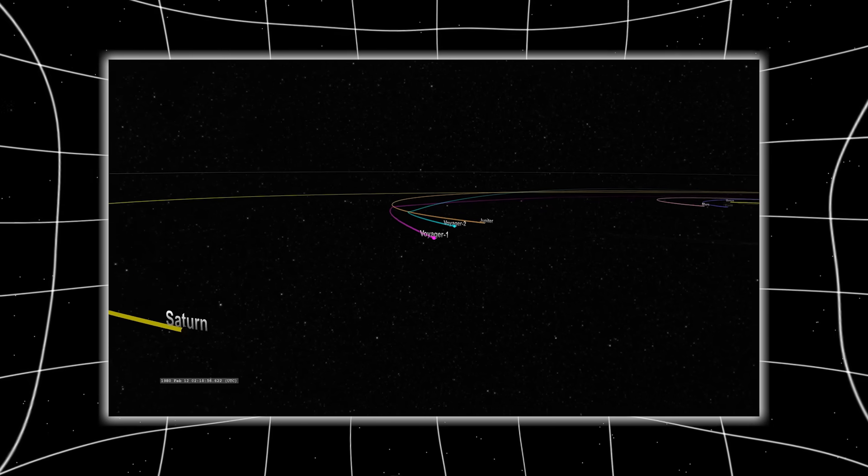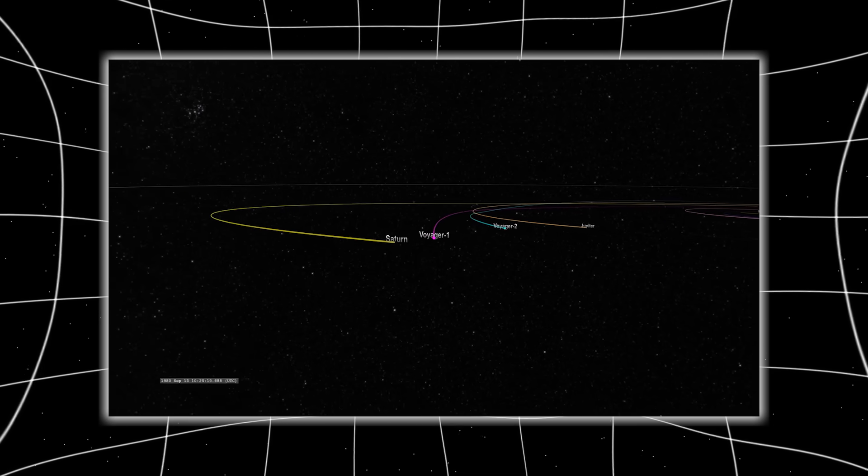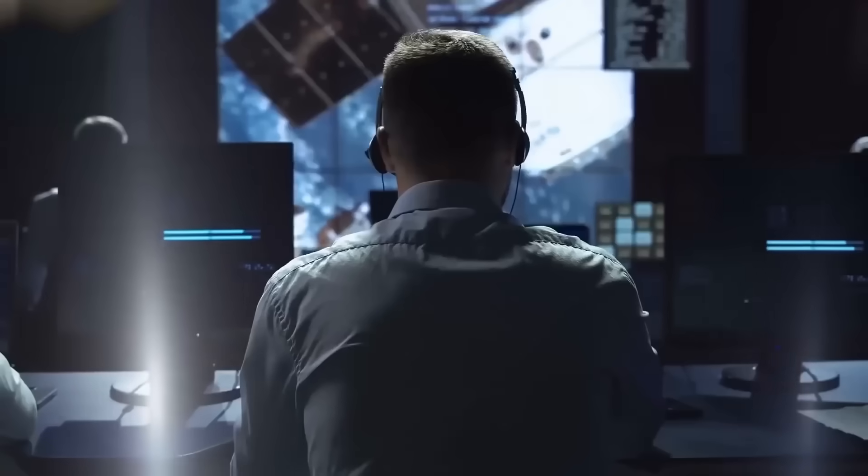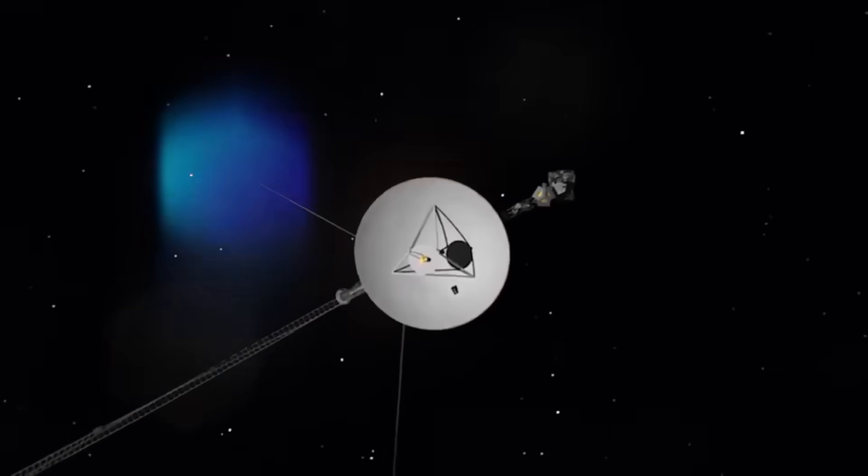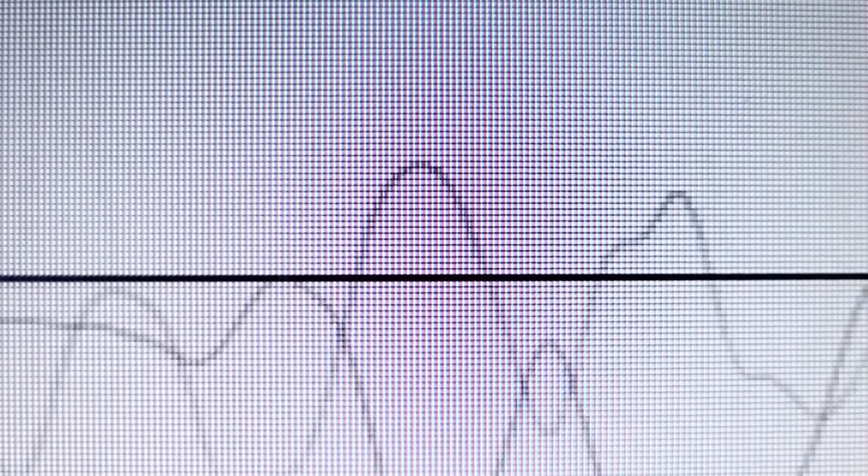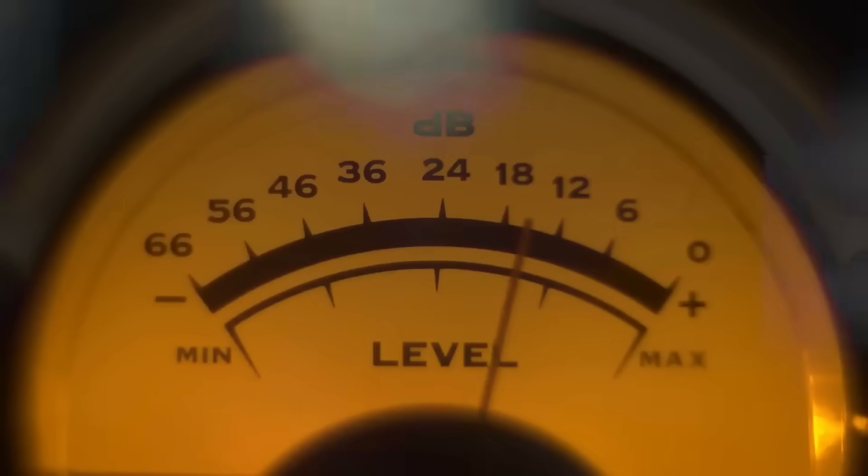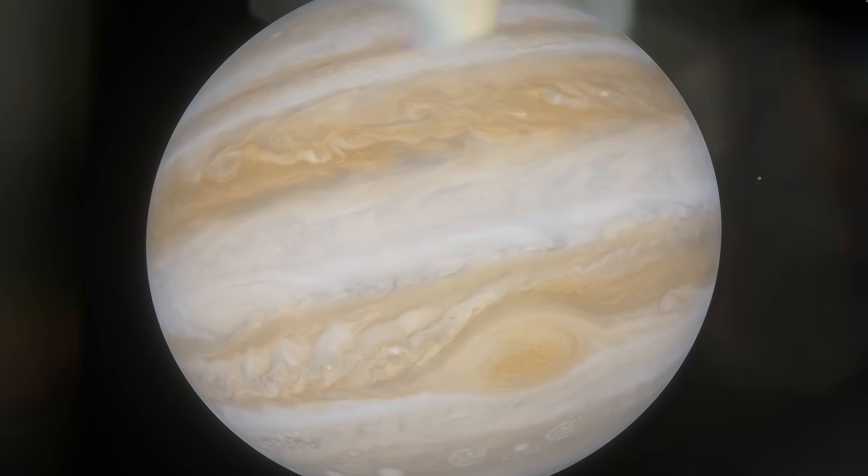The turn wasn't random. It aligned with the pulsar grid received days before. A precise angle down to the decimal. As if Voyager had received coordinates and accepted them. It's now en route to a spatial corridor we didn't know existed. A tear. A fold. A transit point. No one knows. But one fact now echoes across mission control like a forgotten prophecy. Voyager 1 just turned. Not because we told it to. But because something else did.